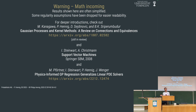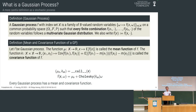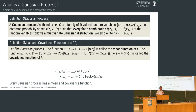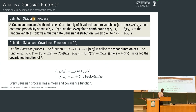Let's take a more careful look at what these Gaussian processes actually are. Here is a refined definition of a Gaussian process, which is pretty much the same I've already used in previous lectures but now a bit more specific. A Gaussian process is a family of real-valued random variables on a common probability space such that every finite combination of function values evaluated at finitely many locations follows a multivariate Gaussian distribution.